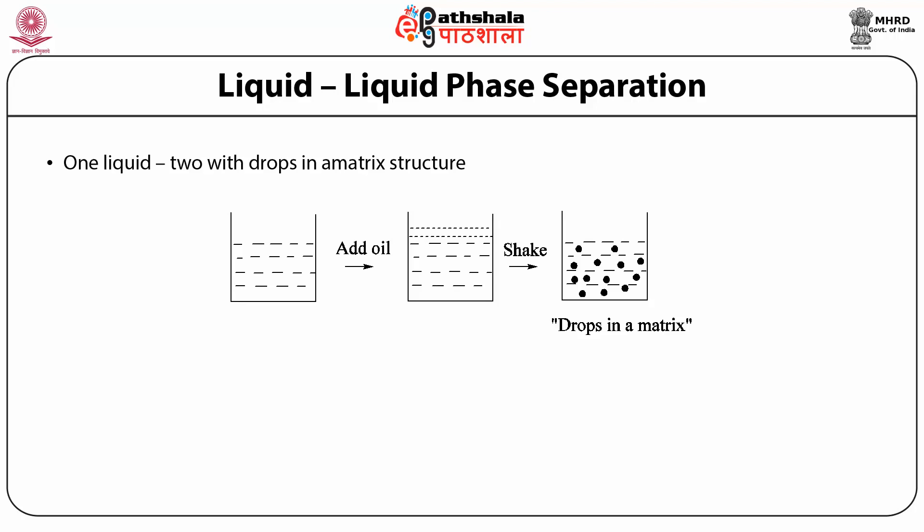If we take some amount of water in a container and add oil to it, the two form a separate layer and do not mix — that is, oil and water are immiscible. If the container is closed and shaken vigorously, the oil breaks into droplets which are dispersed in the major phase, that is water. The two are still immiscible but the morphology has changed from a layer structure to drops dispersed in a matrix structure. In glasses also, a single liquid phase can separate into two immiscible phases under certain conditions. This is called liquid-liquid phase separation.